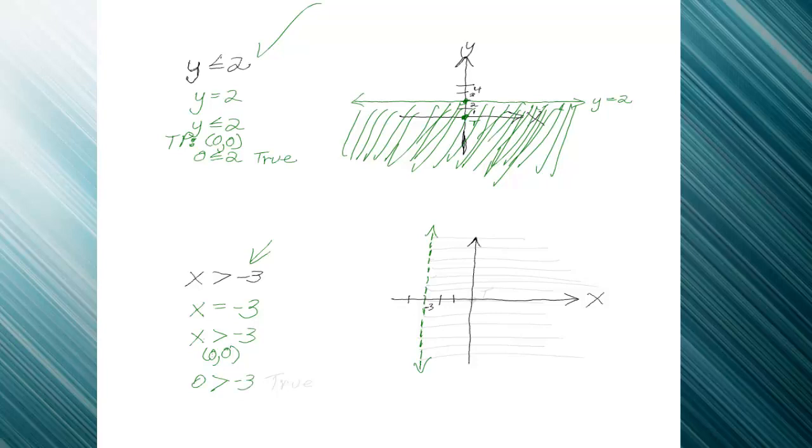And is that true? Well, yeah, it is true. Zero is not greater than positive 3, but it is greater than any negative number, so it's greater than negative 3. So (0,0) gave me a true, and I'm going to graph in the (0,0) direction.